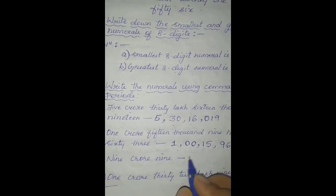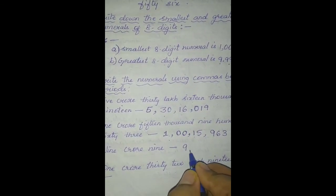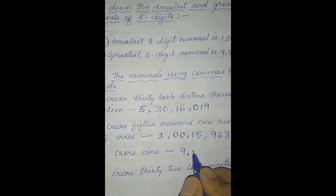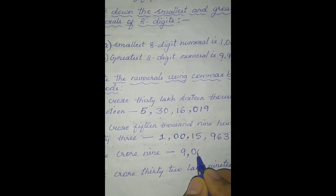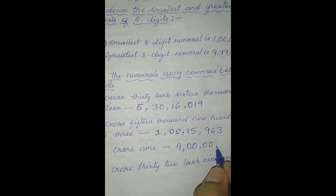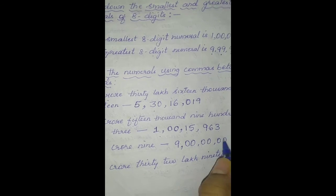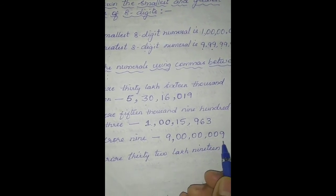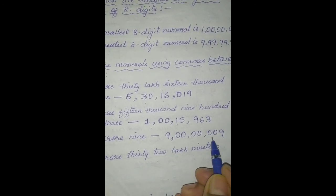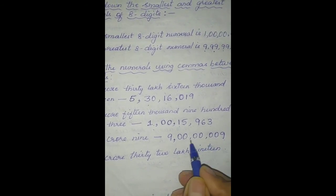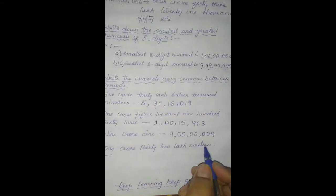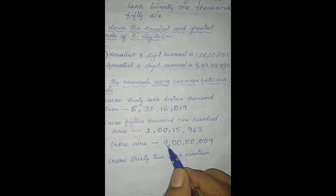Next one: 9 crore, 9. Start with 9 crore. There are no other digits except the ones place. Count the digits: 1, 2, 3, 4, 5, 6, 7, 8 — yes. So the numeral is: 9,00,00,009.